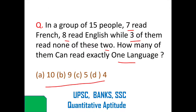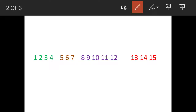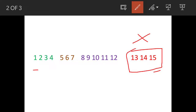Let's say these are 15 people, 1 to 15. It is said that 3 people cannot read any language, so we leave out 13, 14, and 15. Now 7 are reading French, so we mark people 1 through 7 here as French readers.